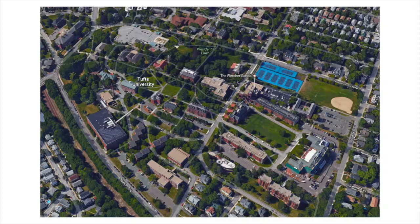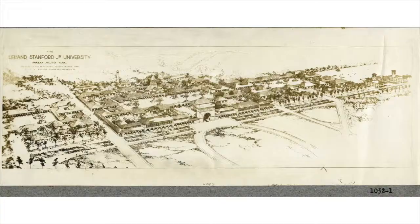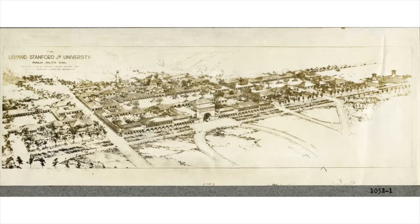He was also known for designing a number of academic campuses, including the University of California Berkeley, Tufts University in Medford Massachusetts, and Cornell University in New York. This is his plan for Stanford University in Palo Alto, California, done with an architectural firm who designed the buildings and placed them into Olmstead's layout. That's why this plan looks more like a design plan rather than just a plot layout — it incorporates the architect's drawings for the actual buildings. It's absolutely gorgeous.